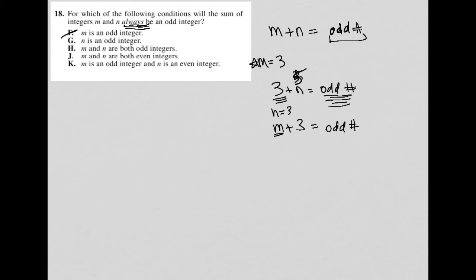Because again, m could be 1, 3, 5. Any of those numbers makes the answer even and not odd. So choice G is gone. Now we're getting into where we're looking at both variables here.